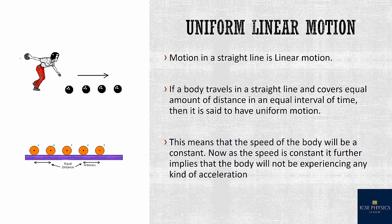To illustrate this: suppose we have points A, B, C, and D, and a ball is travelling in a straight line. Say the distance from A to B is 2 meters, B to C is also 2 meters, and C to D is also 2 meters. The time taken for each interval is 1 second — 1 second from A to B, 1 second from B to C, 1 second from C to D.